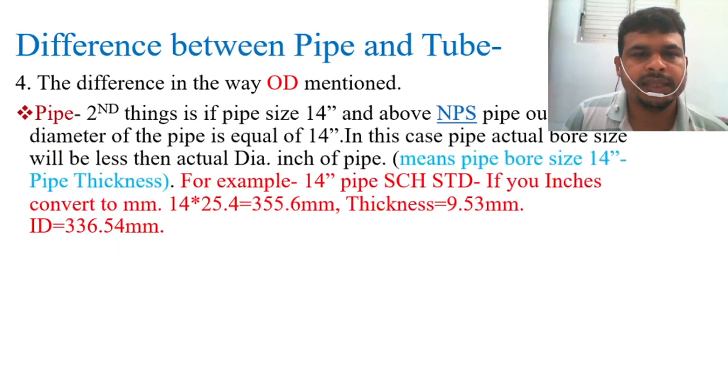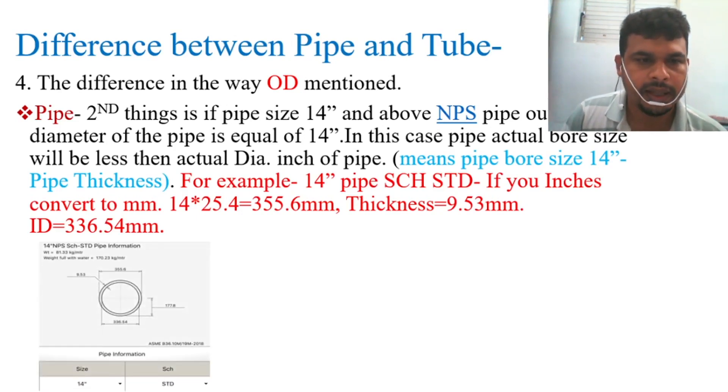Second thing: if pipe size is 14 inches and above NPS, the nominal pipe size outside diameter of the pipe is equal to 14 inches. In this case, pipe actual bore size will be less than the called size, that means pipe size 14 inches minus pipe thickness. For example, 14 inches pipe is schedule STD. If you convert inches to mm, then you can see 14 into 25.4 equals 355.6 mm. So thickness is 9.53 mm, so ID will be 336.54 mm. Let's see in the picture.